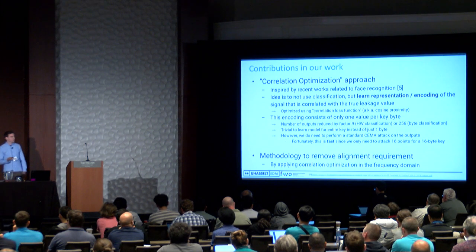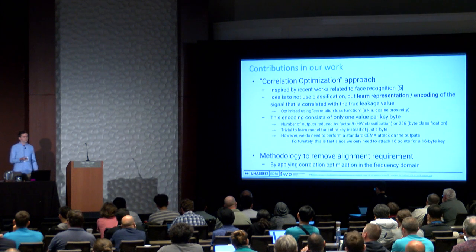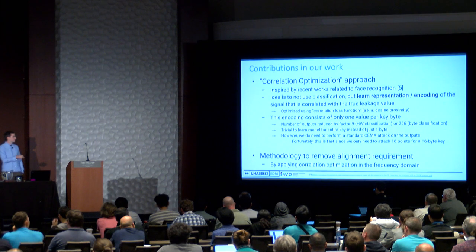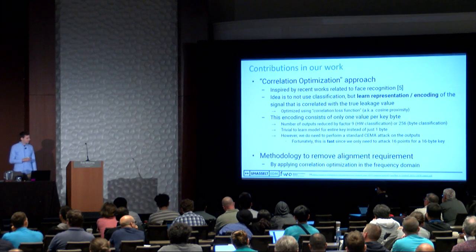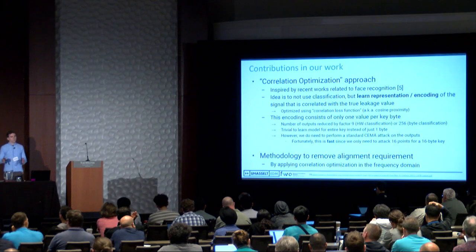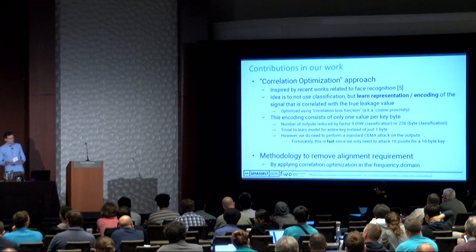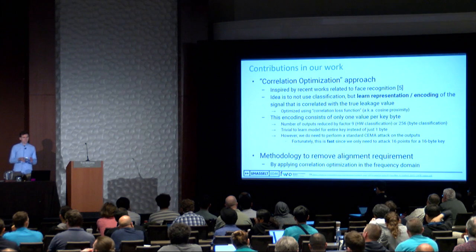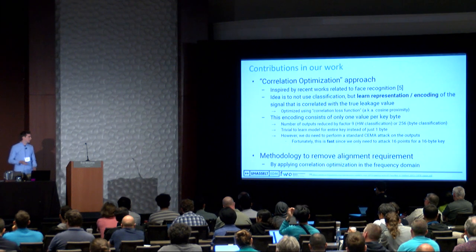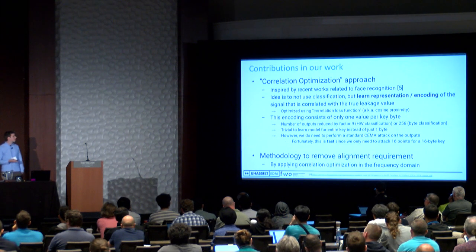A disadvantage is that we need to perform a standard CMA attack on the outputs of the neural network—on the encodings instead of the actual traces. However, this is very fast because it only needs 16 points for a 16-byte key. A second contribution is a methodology to remove the alignment requirements. If you want to perform a CMA attack on a set of traces, you want to make sure every trace is aligned at the same point; otherwise you'd be taking correlations at different samples, which is not what you want.